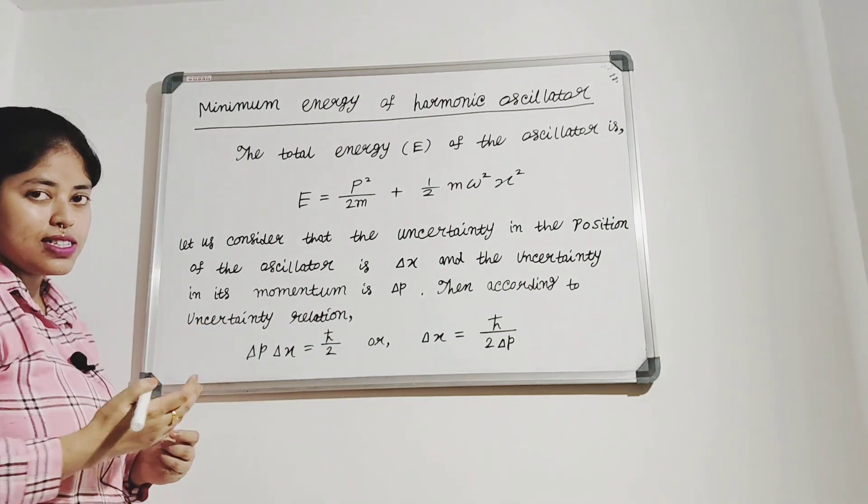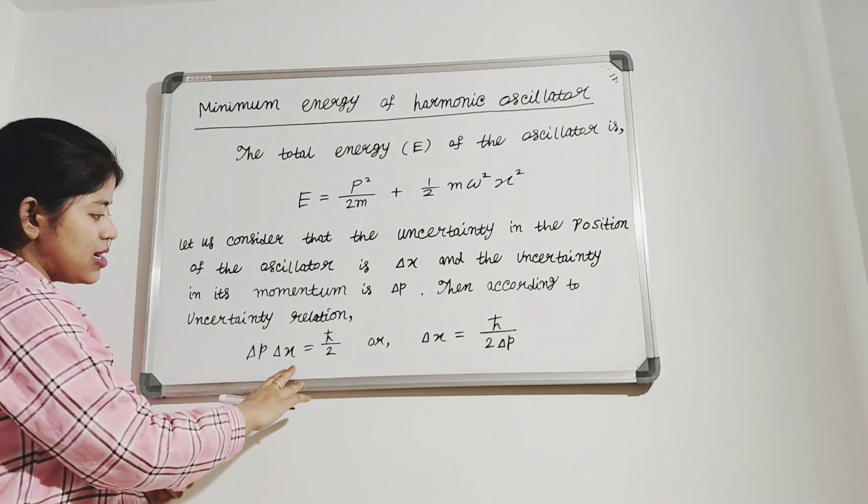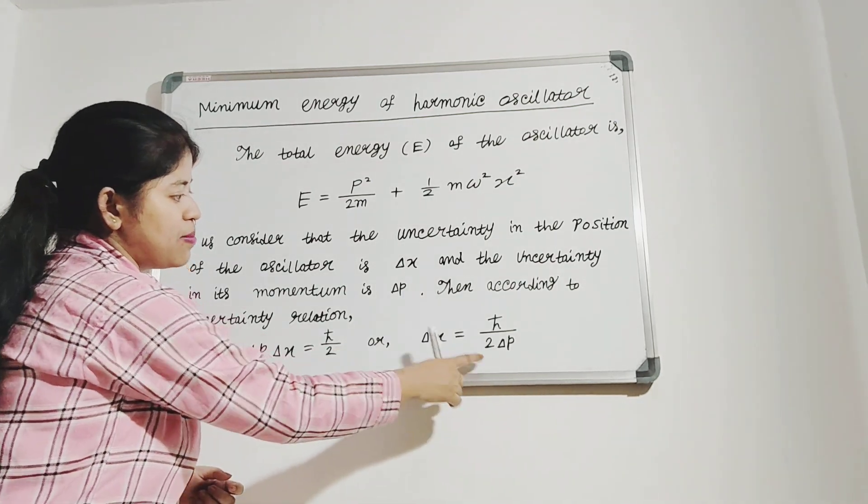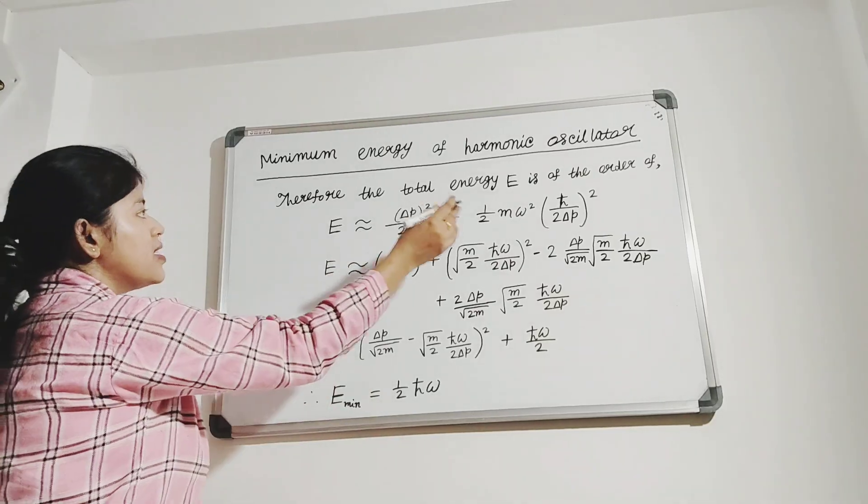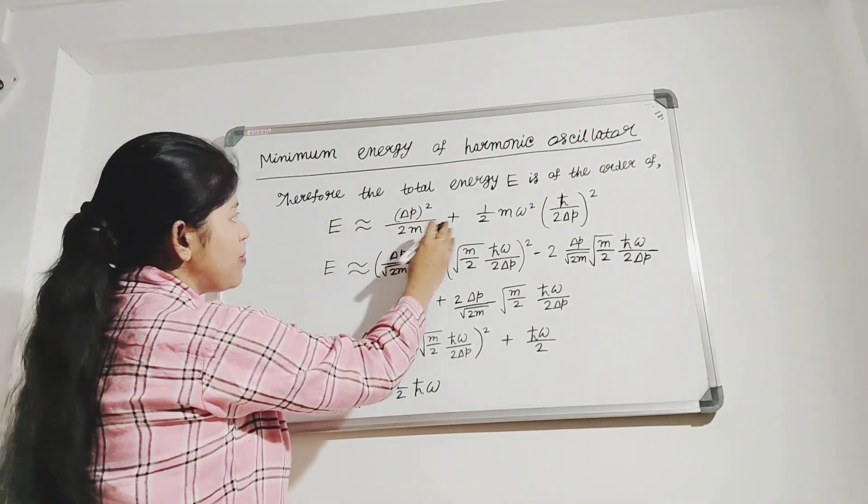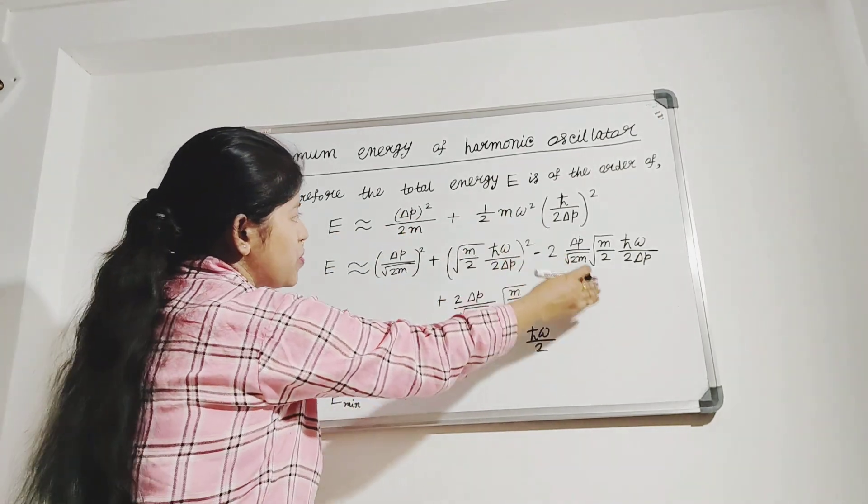Now according to the uncertainty principle, delta p into delta x equals h-cut by 2, or we can write delta x equals h-cut by 2 delta p. Therefore, the total energy E is of the order of E equals delta p squared by 2m plus half m omega squared h-cut by 2 delta p squared.